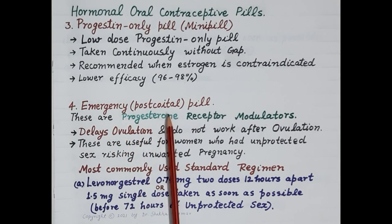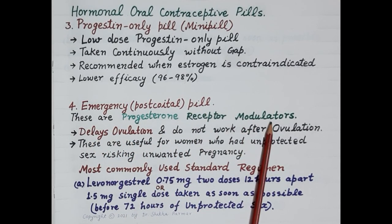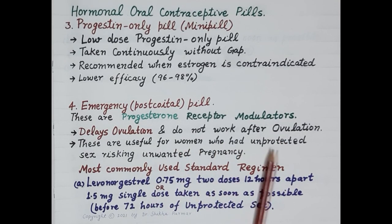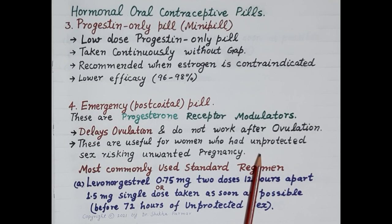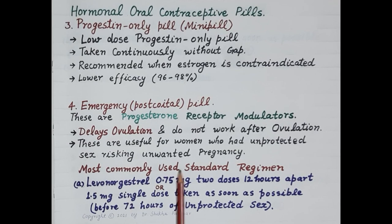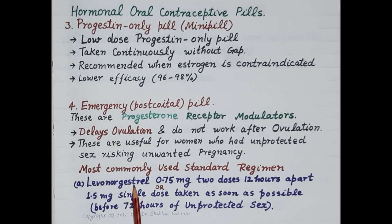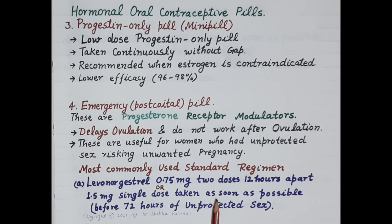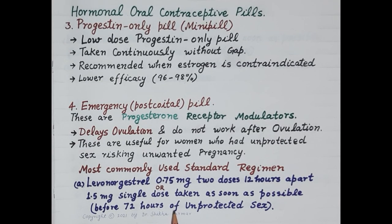The fourth type are emergency post-coital pills, which are progesterone receptor modulators. These pills delay ovulation but do not work after ovulation has already occurred. They are useful for women who had unprotected sex risking unwanted pregnancy and should be taken as soon as possible. The first standard regimen consists of levonorgestrel 0.75 mg in two doses 12 hours apart, or 1.5 mg as a single dose, taken within 72 hours of unprotected sex.